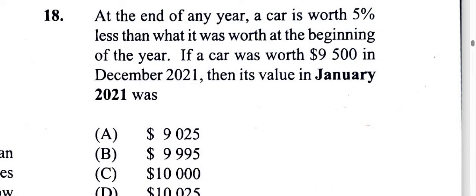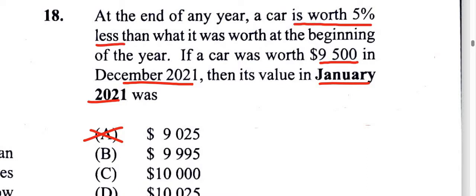This question requires some thinking. January 2021 is the beginning of the year and December 2021 is the end of that year. The car is worth $9,500 at the end of the year, so at the beginning of that same year it would have been worth more than $9,500. The beginning value must be more because the car depreciates — in fact, we're told the car is worth five percent less than what it was worth at the beginning.